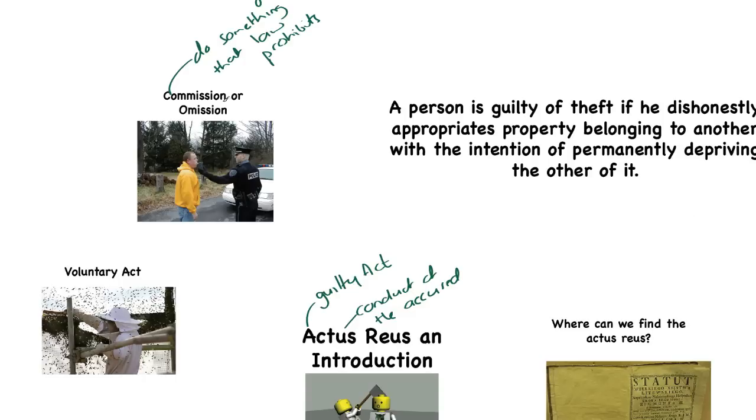But there are some occasions in which you can complete actus reus by not doing something that the law requires. I've put this picture here to demonstrate this. This is a roadside breath test. The law requires you to provide a sample of breath to a police officer when requested to do so. Not doing something that the law requires you to do, in this instance, is an offence.